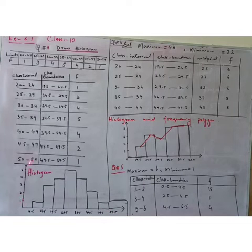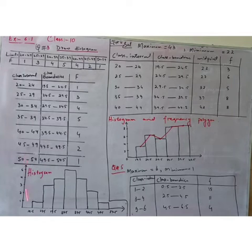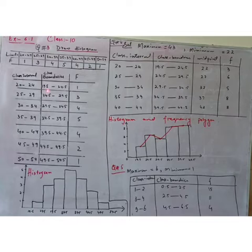Along the y-axis, we draw frequencies. The different frequencies given are 1, 3, 4, 5, 4, 2, 1. So we mark 1, 2, 3, 4, 5 on the y-axis. For the first class boundary 19.5 to 24.5, we have frequency 1, so we draw a bar.